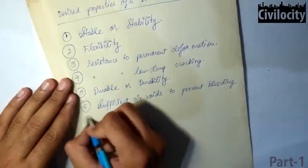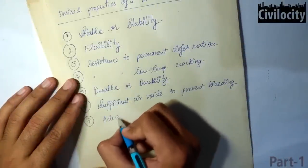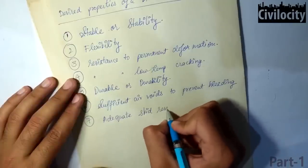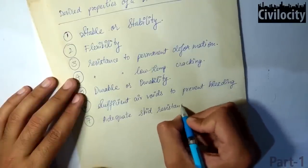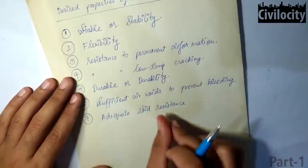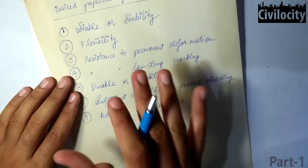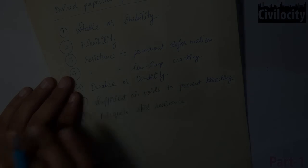The seventh point is, it should have adequate skid resistance. You know what is skid resistance? When a vehicle stops immediately, then the chances of skidding gets increased. So, to prevent the phenomenon of skidding, our pavement should have adequate resistance to skidding.